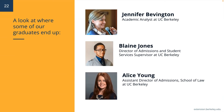Here are a couple of our recent graduates and their current positions. Jennifer Bevington is an academic analyst at UC Berkeley, focused on serving graduates and managing strategic academic affairs. Blaine Jones is also at UC Berkeley as the Director of Admissions and Student Services Supervisor for the UC Graduate School of Journalism, where he oversees the design, planning, and implementation of the Master of Journalism application review and selection process.